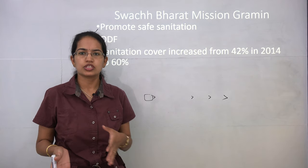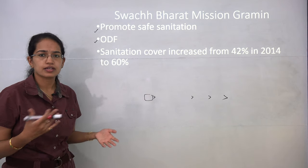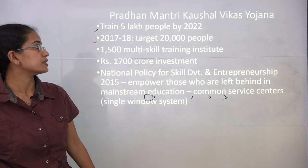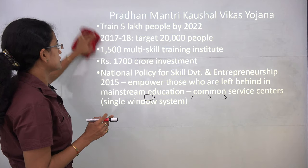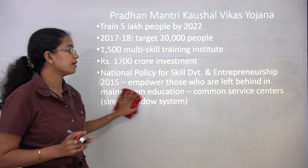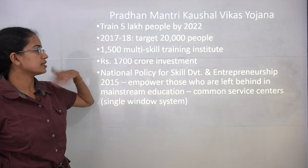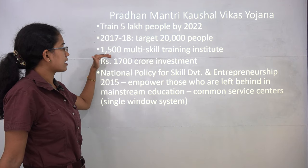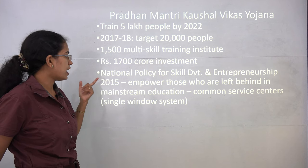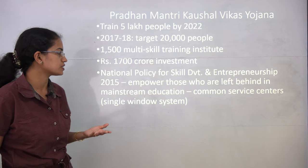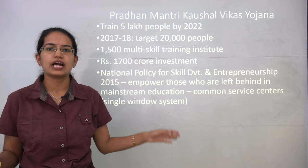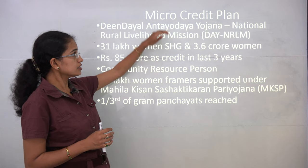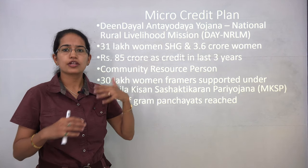Swachh Bharat Mission Grameen is the rural version of Swachh Bharat Mission, focused on making regions open defecation free and promoting safe sanitation. Sanitation coverage has already increased from 42% to 60%. Pradhan Mantri Kaushal Vikas Yojana talks about skill development — the rural version of Skill India — aiming to train nearly 5 lakh people by 2022. The first round targets 20,000 people across nearly 1,500 institutes.